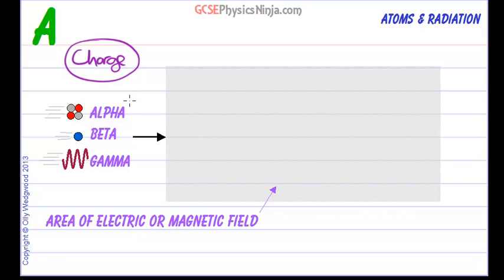An alpha particle has what charge? Well it has got two protons with two neutrally charged neutrons so it has a 2+ charge. A beta particle is a high speed electron so that has a 1- charge.